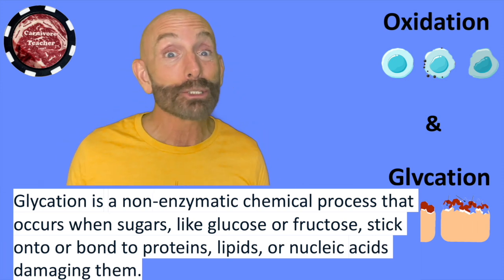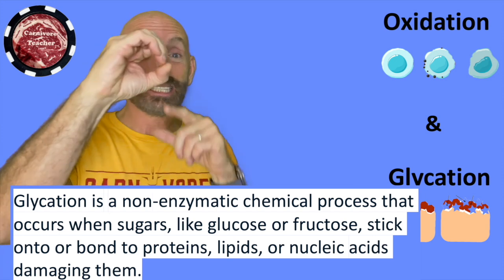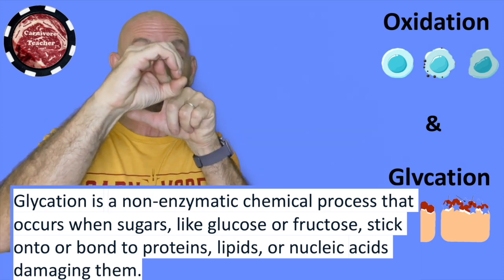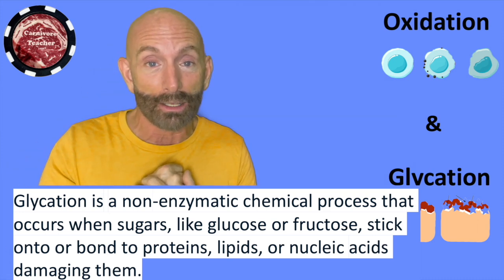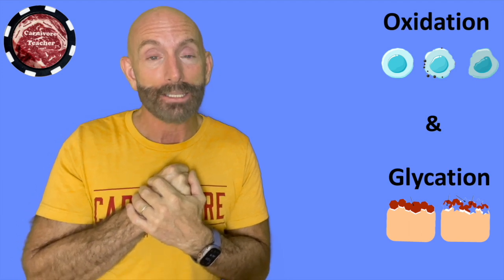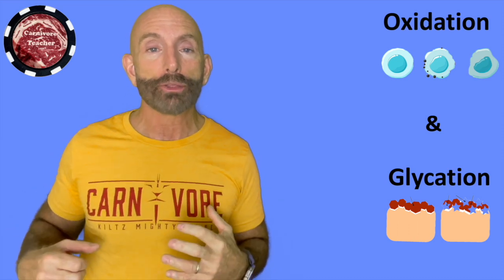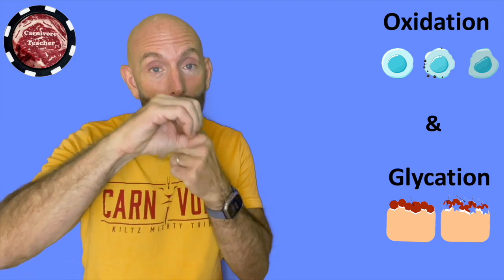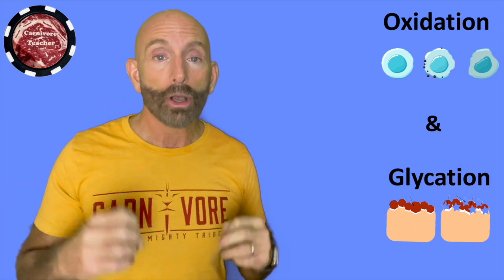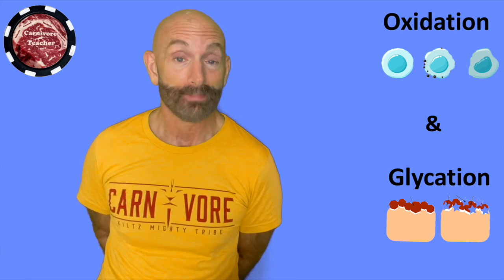And guess what? It sticks inside your arteries. It sticks in the endothelial cells of your arteries and damages the skeletal structure of those cells — they're misshapen now. The body sees that damage and says it's going to go fix it and throw a bandaid there. That's where cholesterol and other things go to make a plaque to fix it. The sugar caused the damage. Glycation is when glucose sticks onto proteins and damages the proteins.